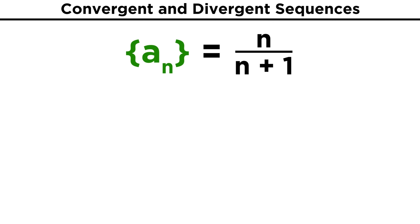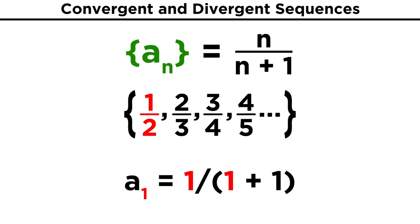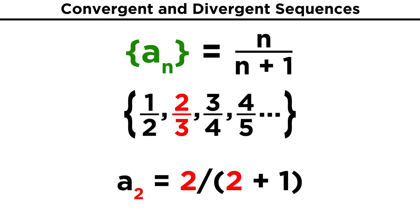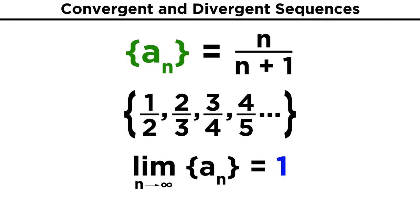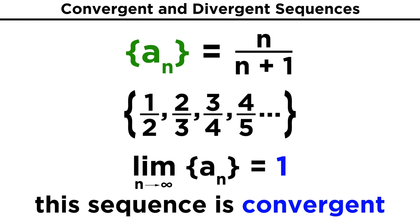Then let's look at something like A sub n equals n over n plus one. This will give us one half, two thirds, three fourths, and so forth. We can pretty quickly see that this sequence will approach one, but never quite get there, so the limit of this sequence as n approaches infinity is one. Because the limit exists as a finite number, we would call this sequence convergent.